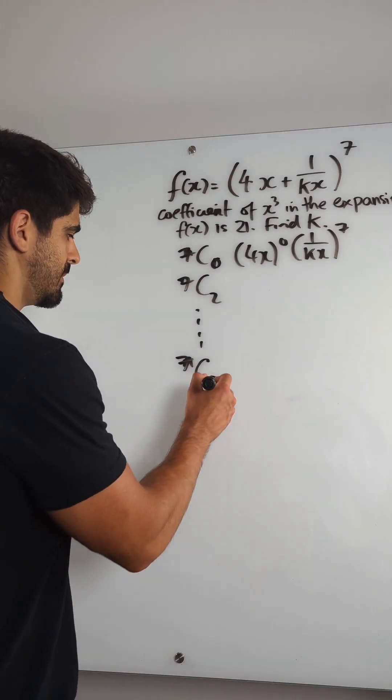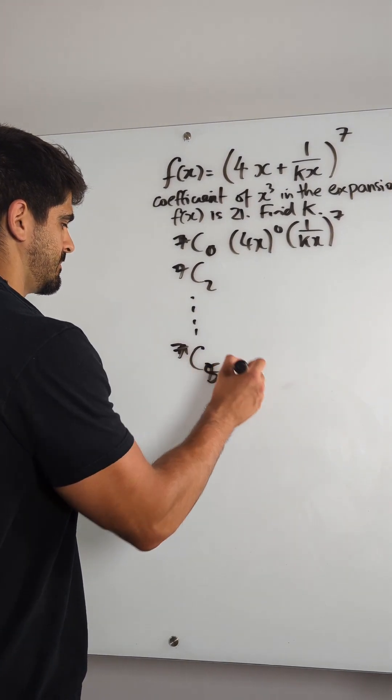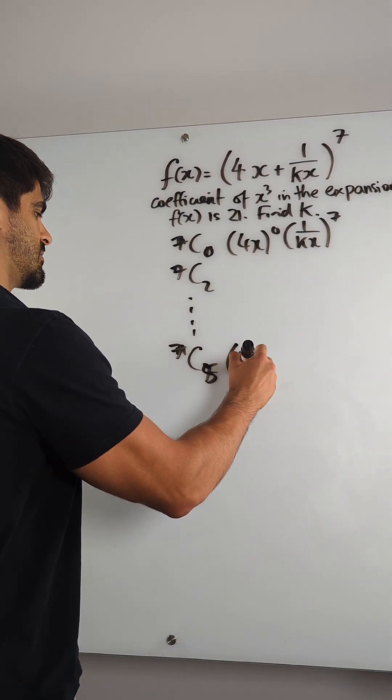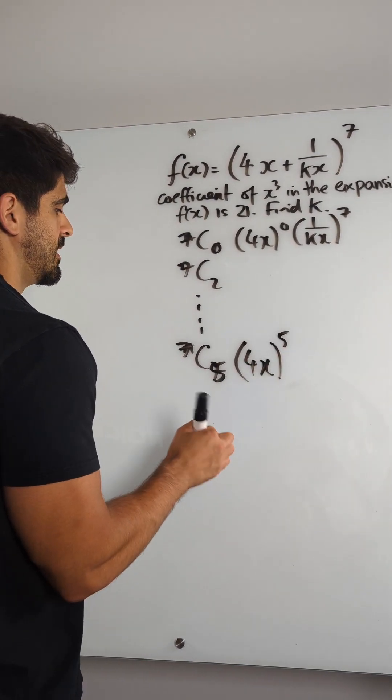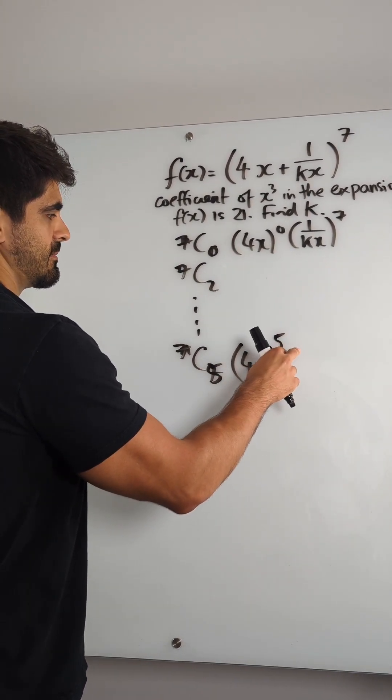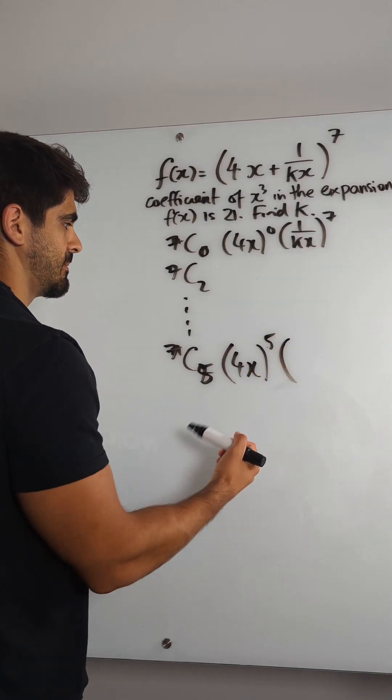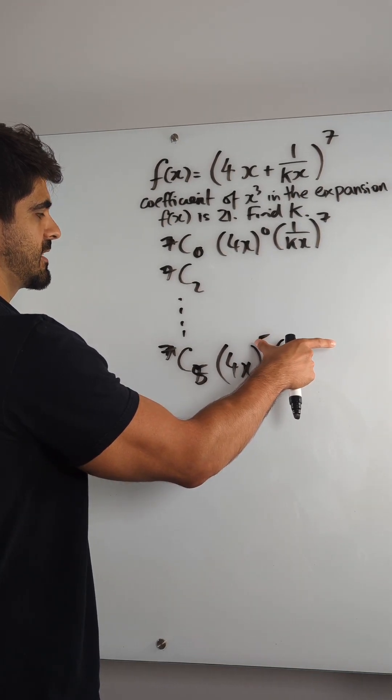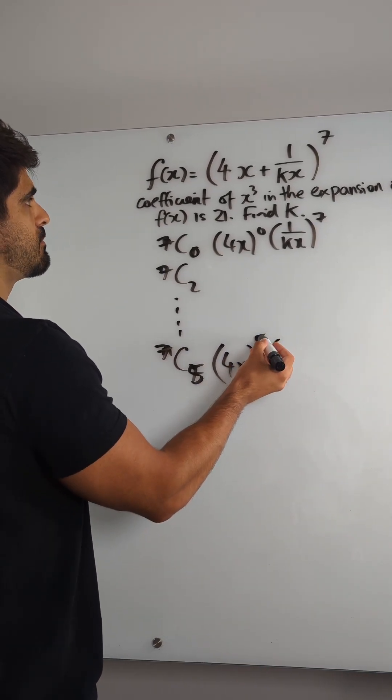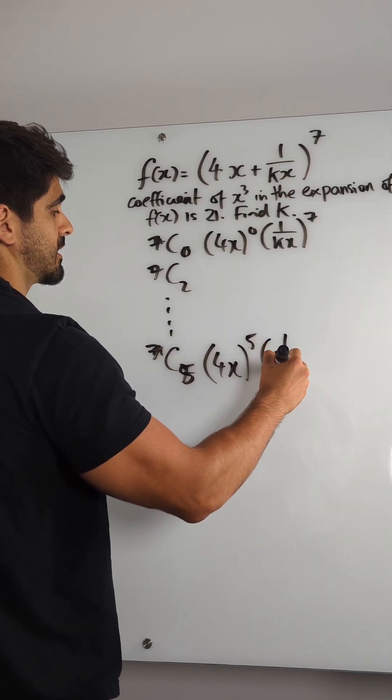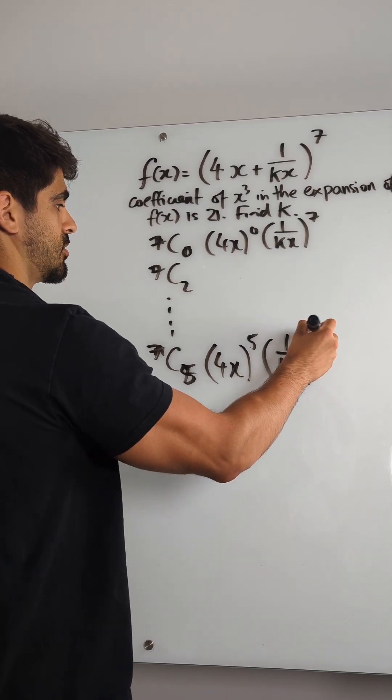So for example, let me try 5. I would have 4x to the power of 5. Remember, this number is always the same as this one, just so you don't make a mistake. I just make sure these are the same. But the main thing is that the powers on these have to add up to 7. So if that's power of 5, then 1 over kx would be 2.